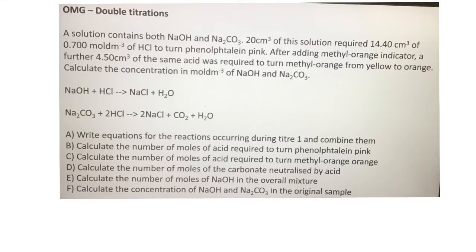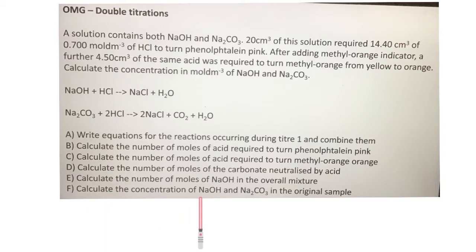Hello, welcome to another OMGAS chemistry video. Today we're going to be looking at double titrations. A double titration is used when we've got a mixture of bases. We're going to have to do two titrations because one base requires one mole of acid and another base requires two moles of acid. The goal of this analysis is to calculate the concentration of each of these bases — in this case, sodium hydroxide and sodium carbonate.